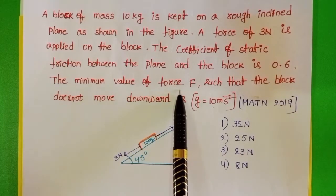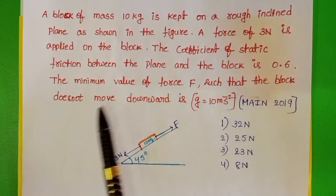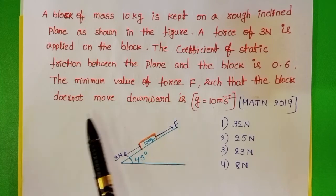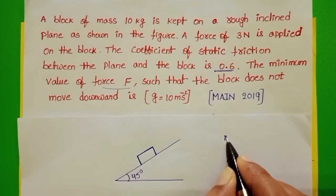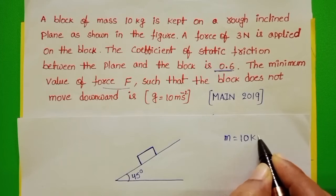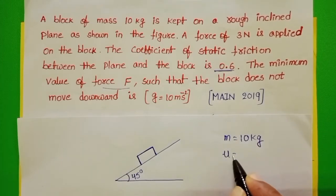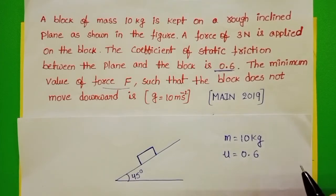The minimum value of force F such that the block does not move downward is given. Mass of the block is 10 kg and the coefficient of friction is 0.6.